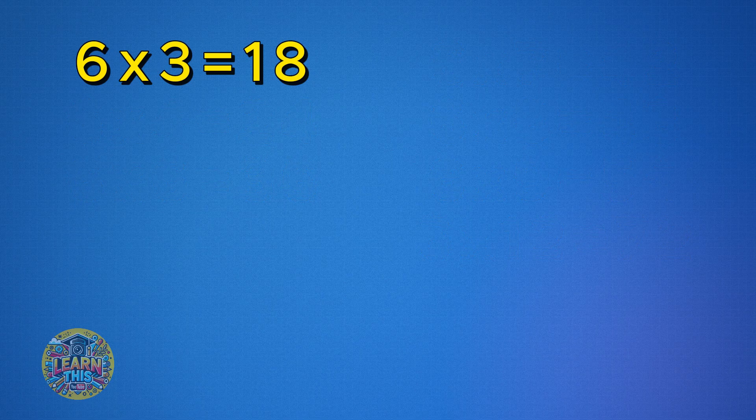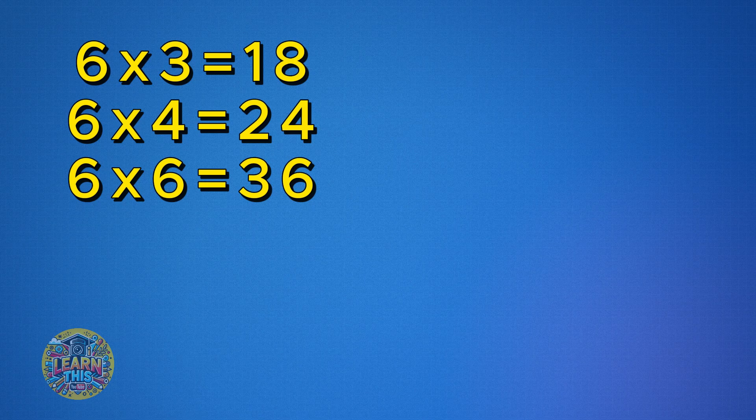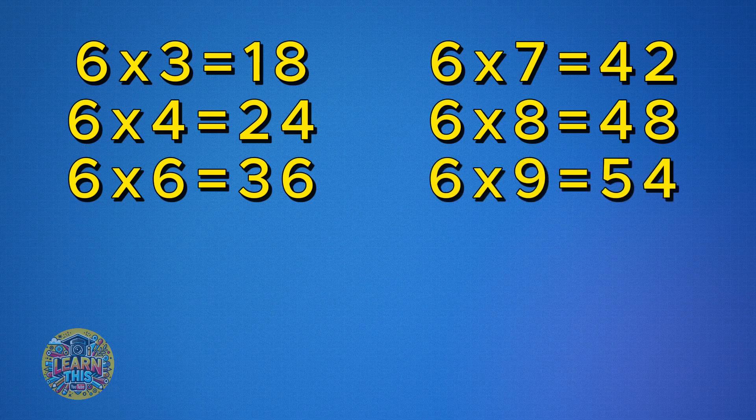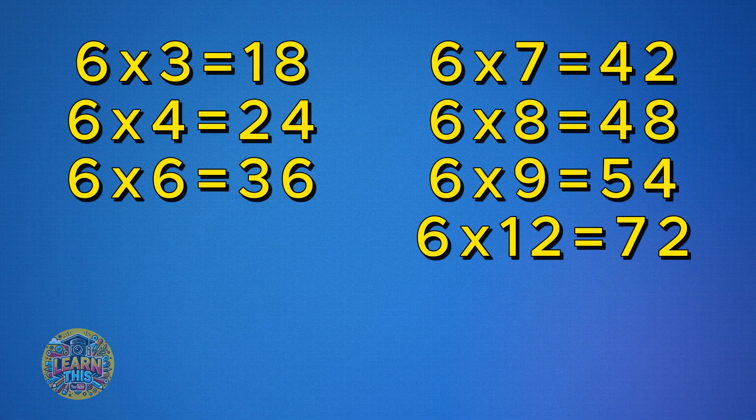Six times three is eighteen. Six times four is twenty-four. Six times six is thirty-six. Six times seven is forty-two. Six times eight is forty-eight. Six times nine is fifty-four. Six times twelve is seventy-two. Take a moment to review these on your own.